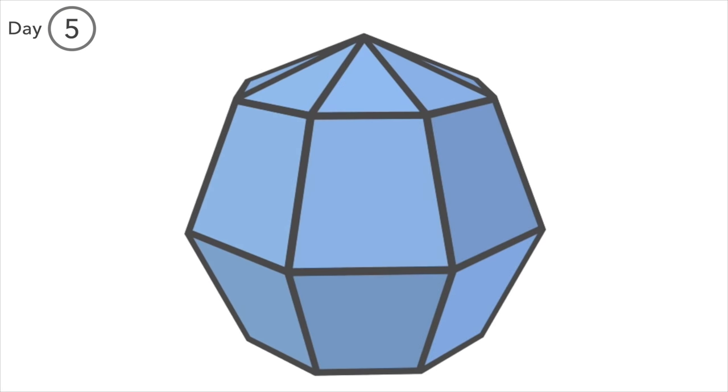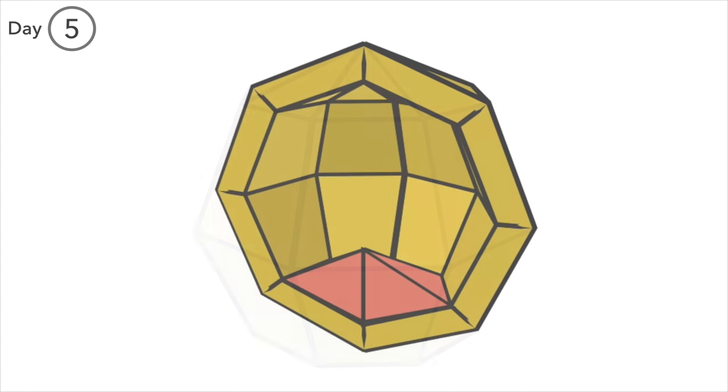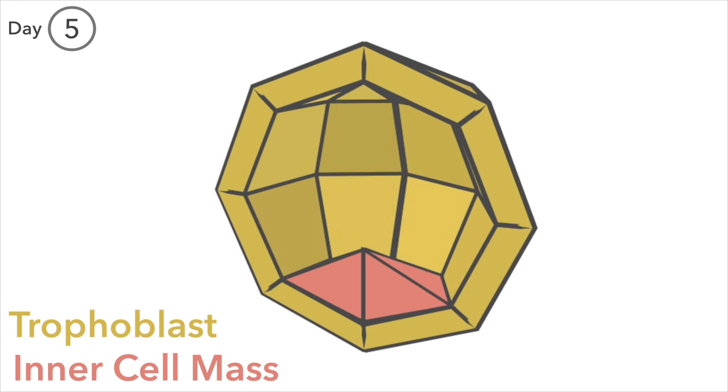Day 5. The blastocyst has shed its outer shell. Cells have separated into two distinct areas. The trophoblast, which develops into the placenta and will feed the embryo, and the inner cell mass, which develops into the embryo proper.